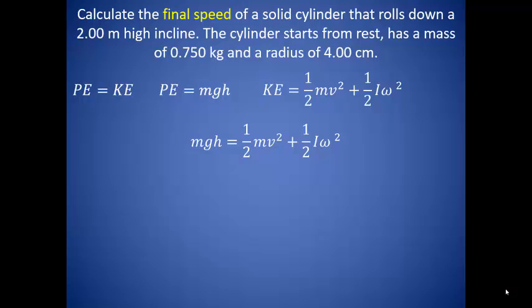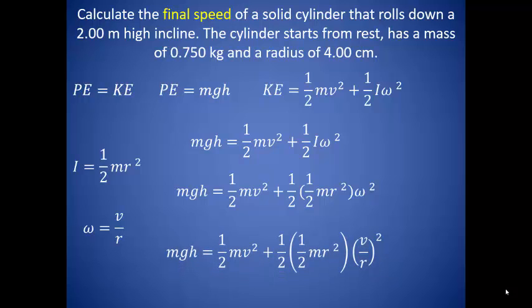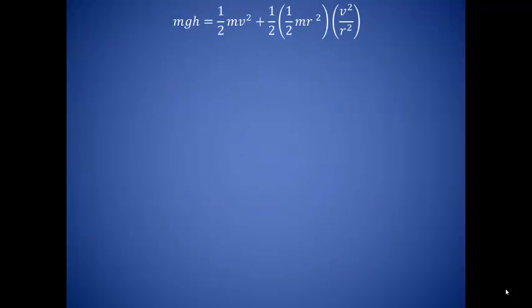Now before we go plugging in numbers everywhere, let's look at a few things. First, we need to know how to find the moment of inertia. Since this is a solid cylinder, it is found by taking one half times the mass times the radius squared. So we can plug that in for our moment of inertia in our equation. Now we also know that the angular velocity ω is equal to the velocity v divided by the radius. So we can also put that into our expression. Now this is looking scarier as we go along, but let's do a few things with this before we start plugging numbers in.